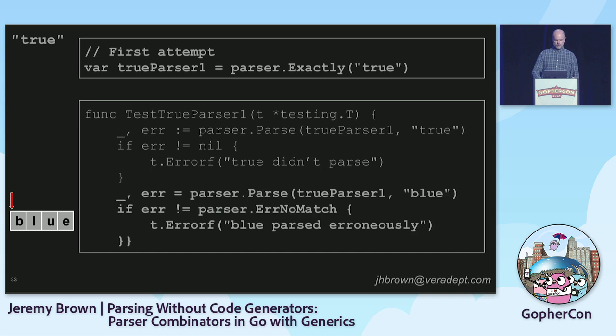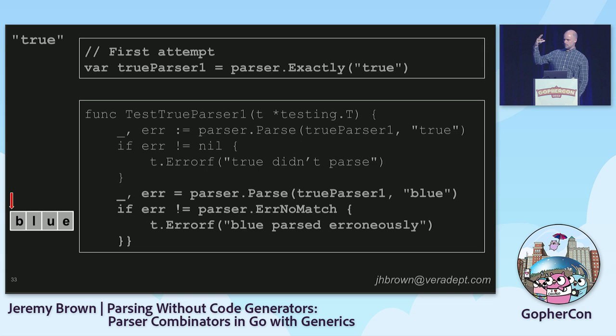One of the cool things about this approach is the ability to do piecewise testing of each individual parser as you build it. You don't have to have the entire language grammar implemented or develop a test that encompasses an entire valid expression in the language. And of course, if you were just at Katie Ochman's talk, you know you could fuzz test this.